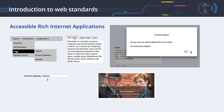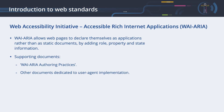This is where the Accessible Rich Internet Application Standard, WAI-ARIA or ARIA for short, comes in. ARIA allows web pages to declare themselves as applications rather than as static documents, by adding role, property, and state information. Similar to the WCAG standard, the ARIA standard offers supporting documents. The WAI-ARIA authoring practices provides detailed advice and examples directed primarily to web application developers. An additional set of documents is dedicated to user agent implementation, for example the core accessibility API mappings. These highly technical documents are of minor interest to document authors.